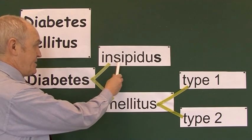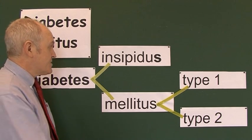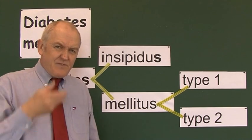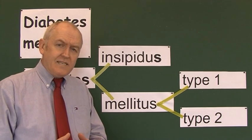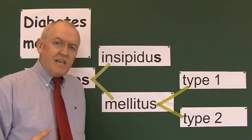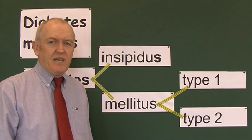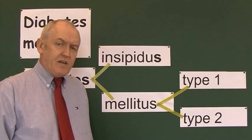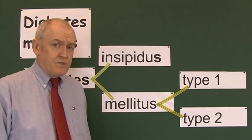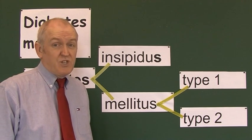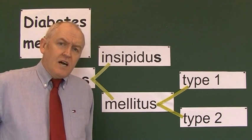Insipid means watery — if you taste something and say it's insipid, it's watery. In diabetes insipidus there is polyuria, but that urine is watery, not sweet. It's very light colored with a low specific gravity — there is not a high solute load in the urine because of the very large volumes. Patients with diabetes insipidus can pass up to 20 liters of urine a day, typically between 5 and 20 liters.